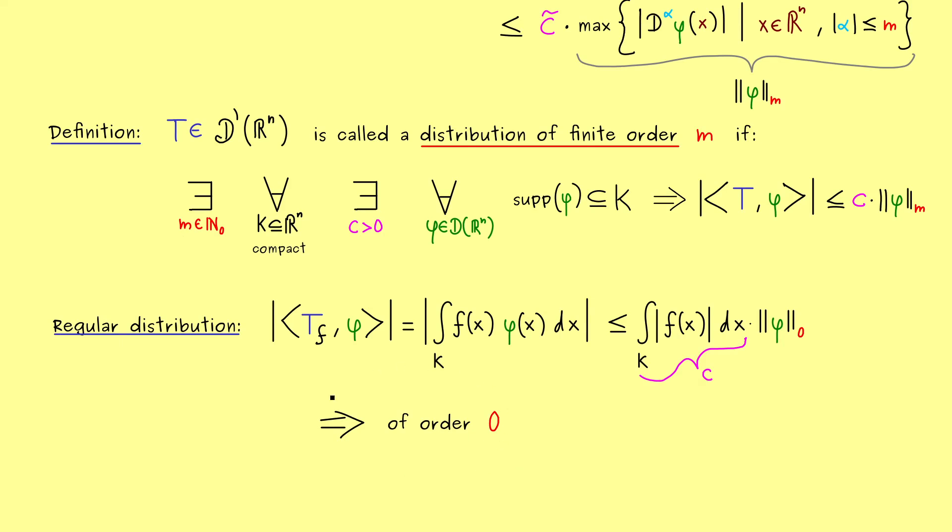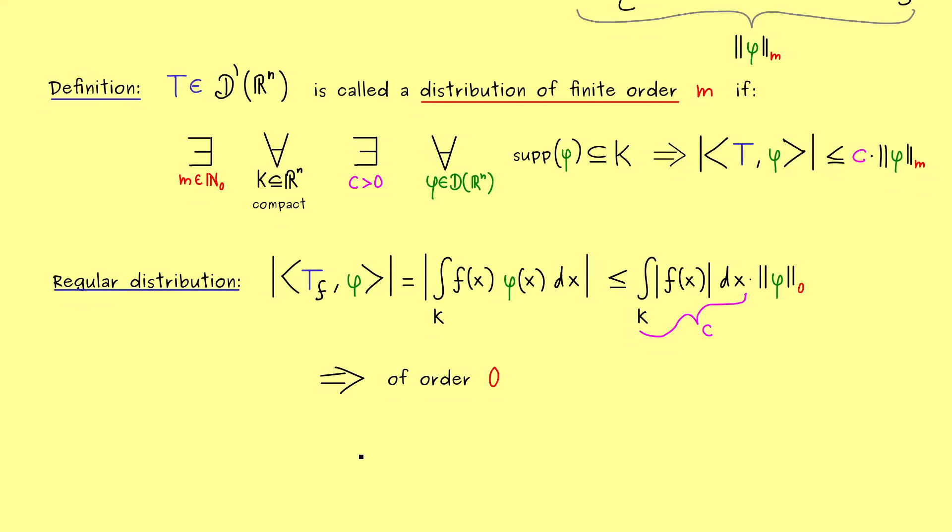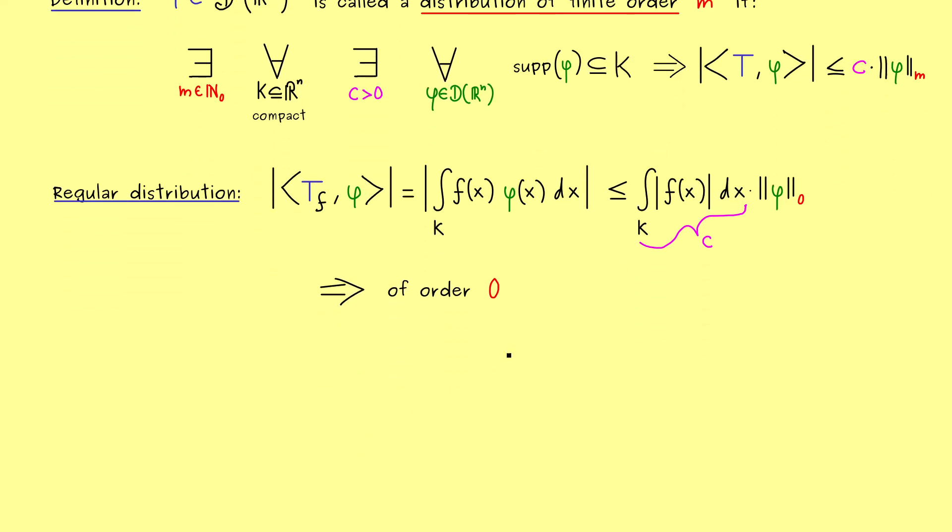And now I can tell you that there is a very interesting fact for distributions of finite order equal to 0. And please don't forget, we already know, they include very important distributions already. Therefore, it makes sense to look at the set of all distributions of order 0.